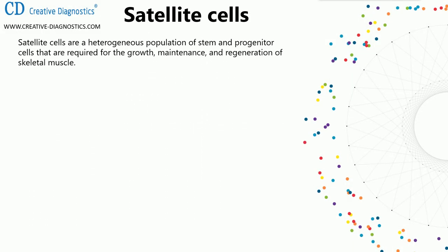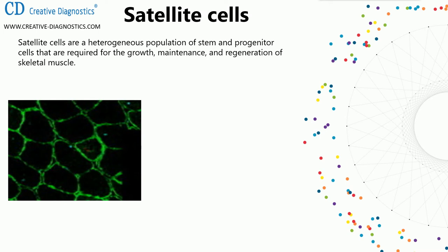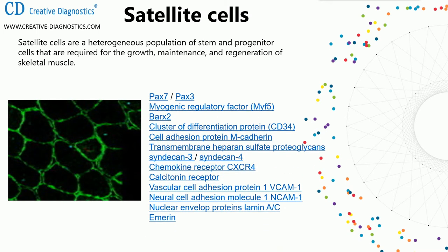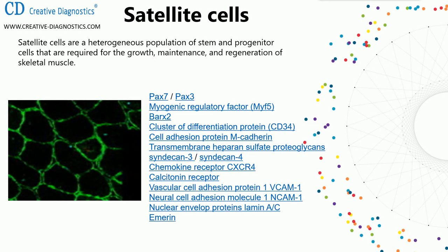Ninth: satellite cells. Satellite cells are a heterogeneous population of stem and progenitor cells required for the growth, maintenance, and regeneration of skeletal muscle. Satellite cell markers include Pax7, Pax3, myogenic regulatory factor MyoD, CD34, VCAM1, M-cadherin, syndecan-3, syndecan-4, CXCR4, calcitonin receptor, VCAM1, NCAM1, and nuclear envelope proteins lamin A/C and emerin.